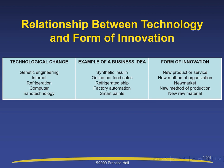Relationship between technology and form of innovation: Genetic engineering — business idea: synthetic insulin — form of innovation: new products or services. Internet — business idea: online pet food sales — form of innovation: new method of organization. Refrigeration — business idea: refrigerated ship — form of innovation: new market. Computer — business idea: factory automation — form of innovation: new method of production. Nanotechnology — business idea: smart paints — form of innovation: new raw materials.